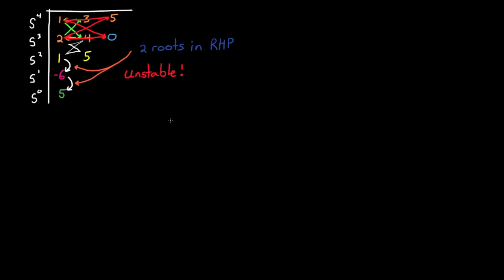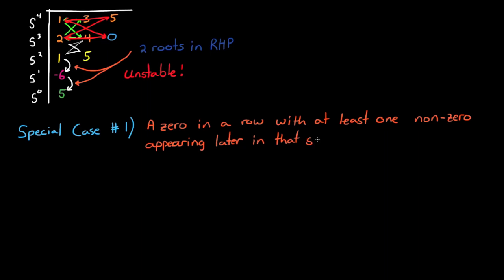Alright, enough of the recap. Now let's get into the two special cases that I mentioned that you can come across when filling out a routh array. The first case is when there is a 0 in a row with at least one non-zero element appearing later in that exact same row.